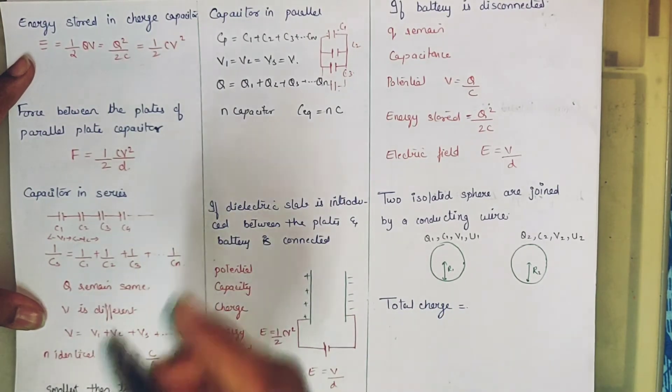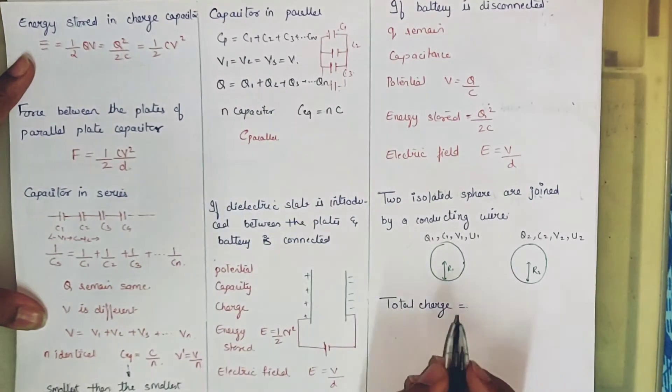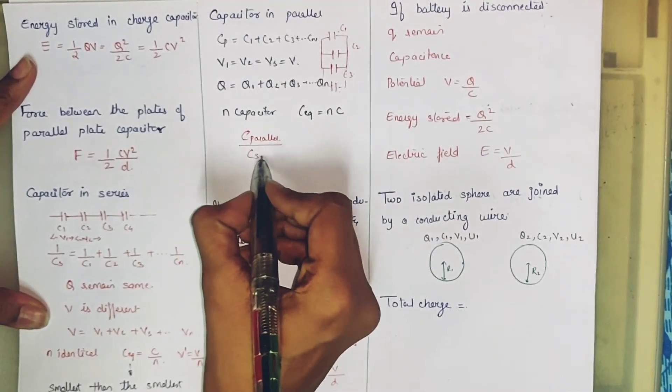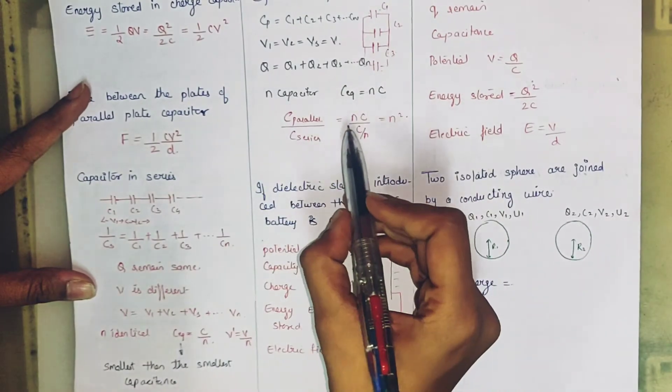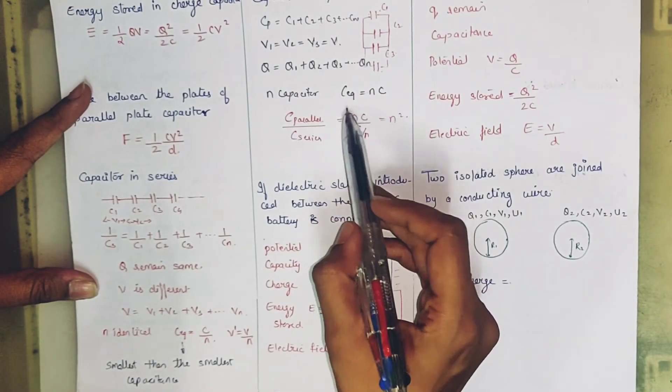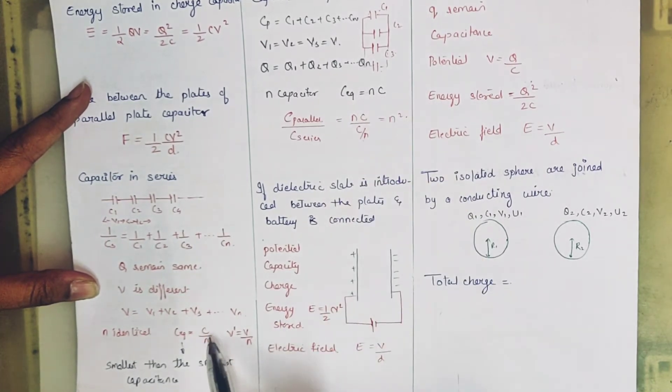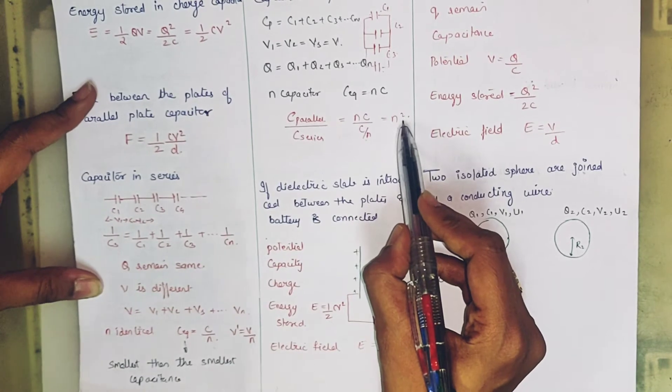Here I am giving you another formula. That is capacitance parallel. If we have connected N capacitance parallel and N capacitors in series, this will be NC upon C by N. How did this come? Our parallel formula is NC and our series is C by N. So if C and C cancel, what will come? N squared.